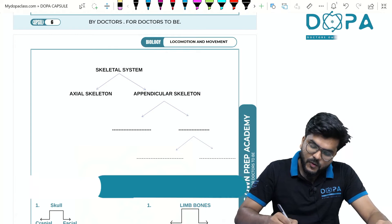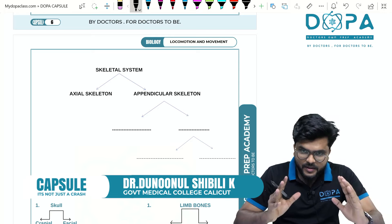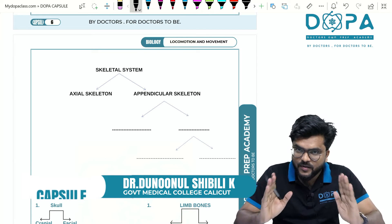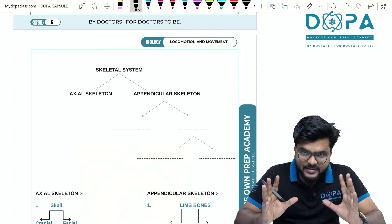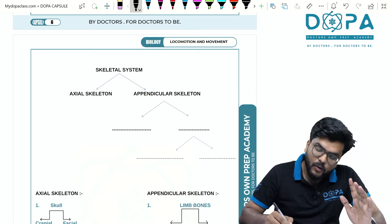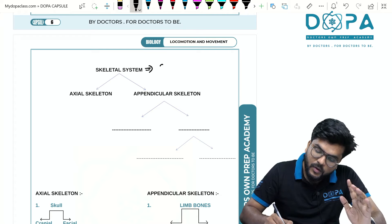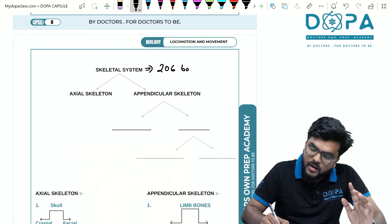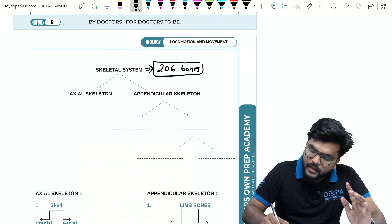Hello students, welcome back to DOPA crash classes. We are continuing with the skeletal system. As we have already told, this skeletal system is composed of totally 206 bones, so you have to individually know regarding the numbering and division of these bones.